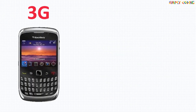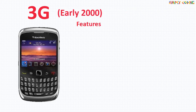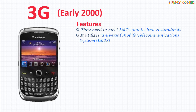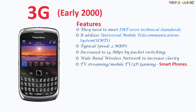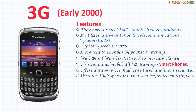3G, or 3rd generation, was introduced in early 2000. These phones were required to meet IMT-2000 technical standards. It utilized Universal Mobile Telecommunication Systems, or UMTS. The typical speed was 2 Mbps, but the original technology was improved to allow data up to 14 Mbps and more by using packet switching. It used a Wideband Wireless Network, which increased clarity. It allowed TV streaming, mobile TV, and 3D gaming, so 3G phones were called smartphones. It also offered data services, high speed web, more security, high speed internet, and video chatting.